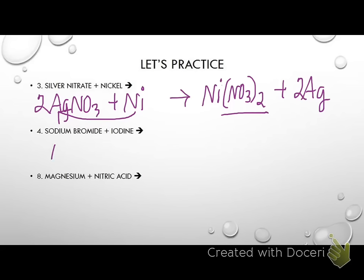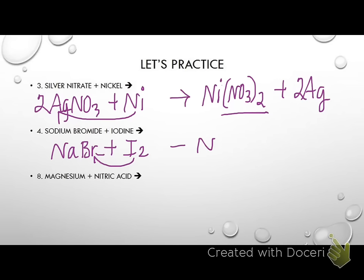I'm going to treat the nitrate as all one thing. I have two of them on the product side and only one on the reactant side, so I'm going to put a 2 in front of AgNO₃, and that will force me to put a 2 in front of Ag. Next: sodium bromide, NaBr, plus I₂. These are non-metals, so I want to know: will iodine replace bromine? It will not, so this is going to be a no reaction.